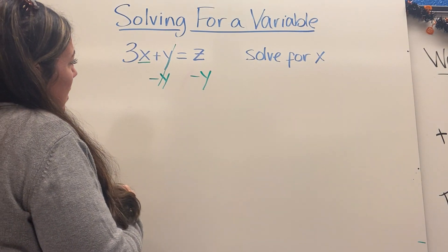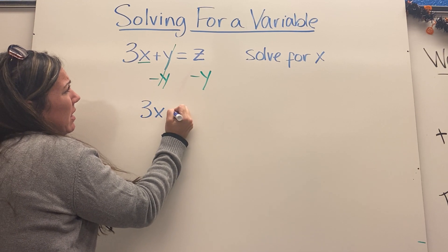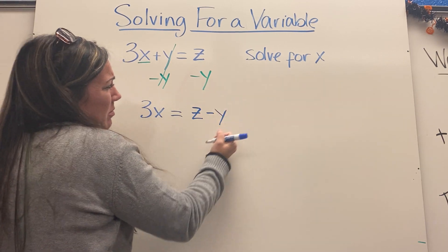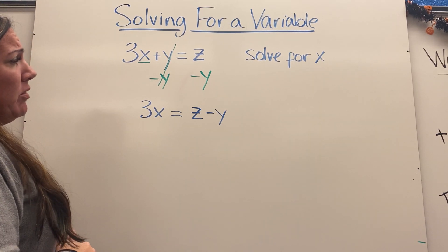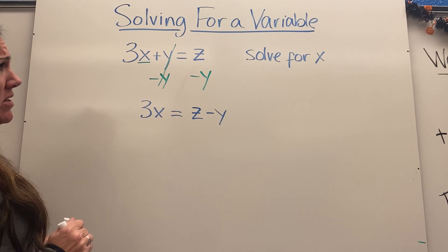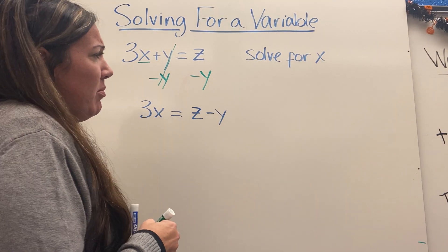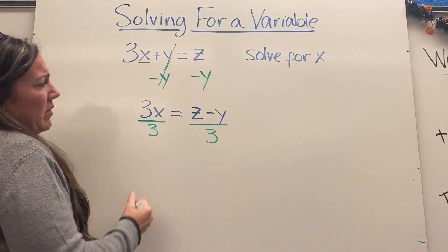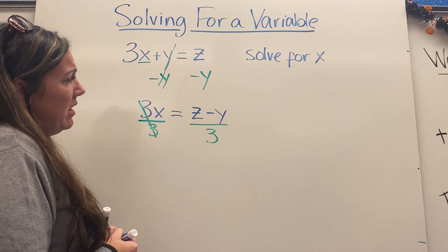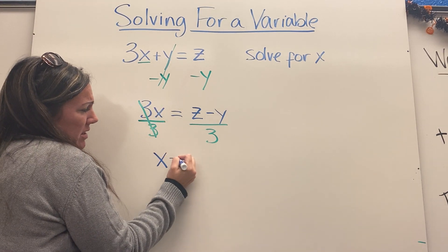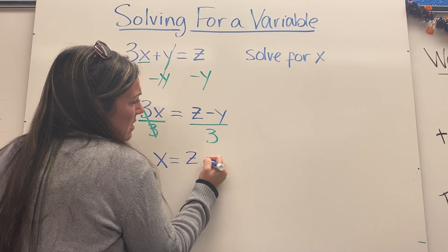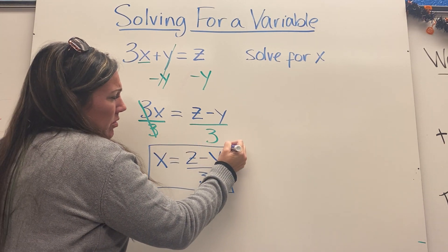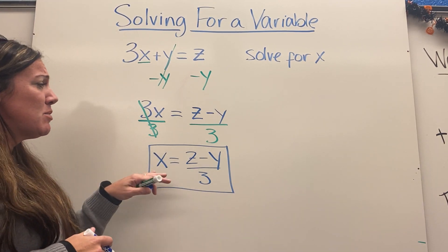That leaves 3x on the left, and on the right I have z minus y. They're not like terms so I can't combine them, I just leave it like this. Now I'm looking at how do I get x by itself still. It's being multiplied by 3, so I'll undo that by dividing by 3. This cancels out, so x is by itself, and to find x I would take whatever z is, subtract y from it, and divide it by 3. That is our answer.